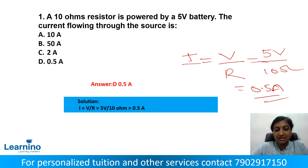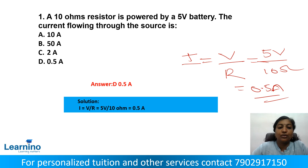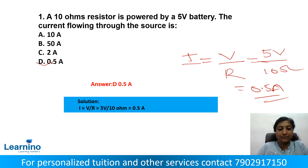The answer is 0.5 amperes. So from the options, the correct answer is option D — 0.5 amperes.